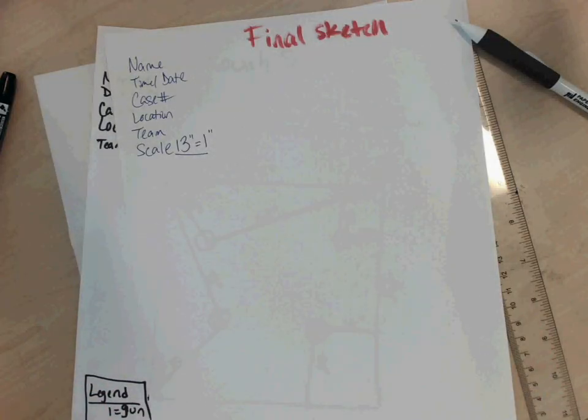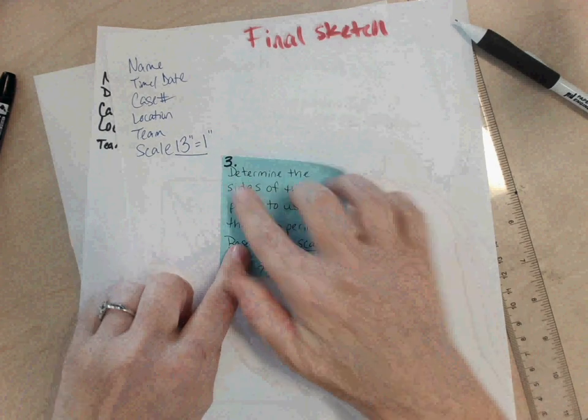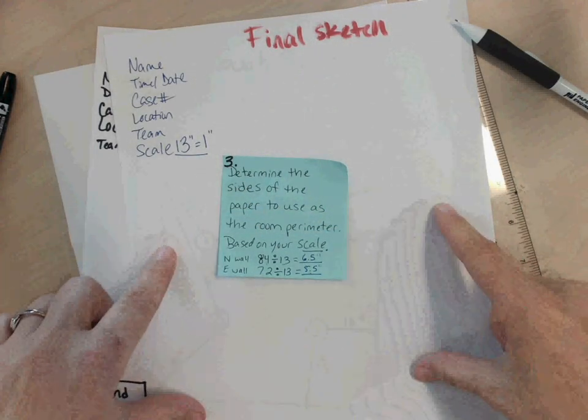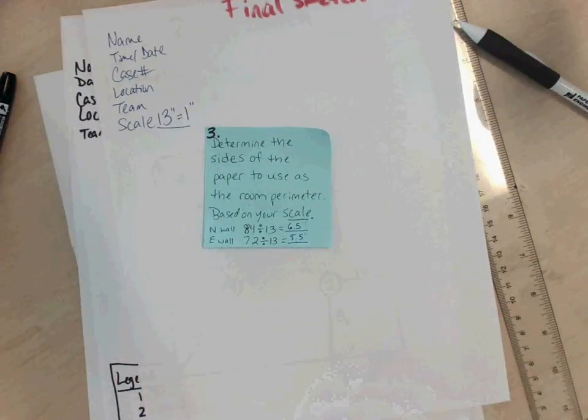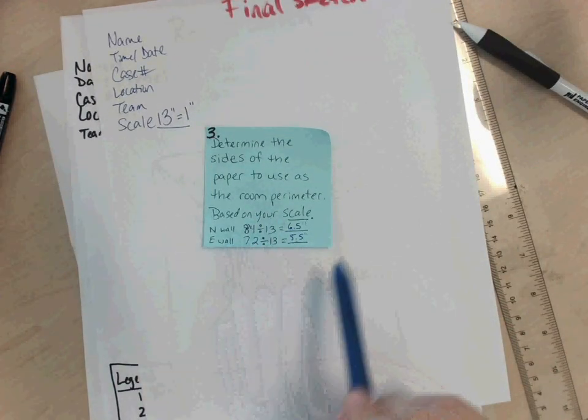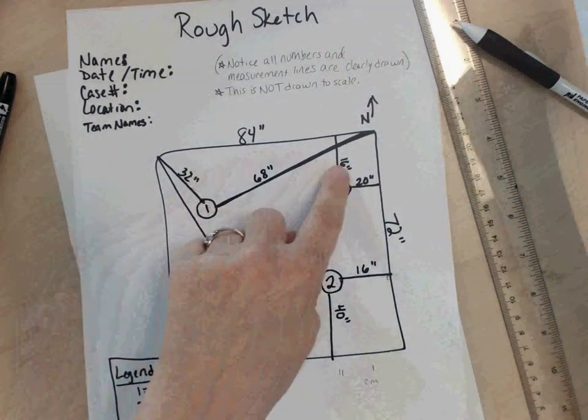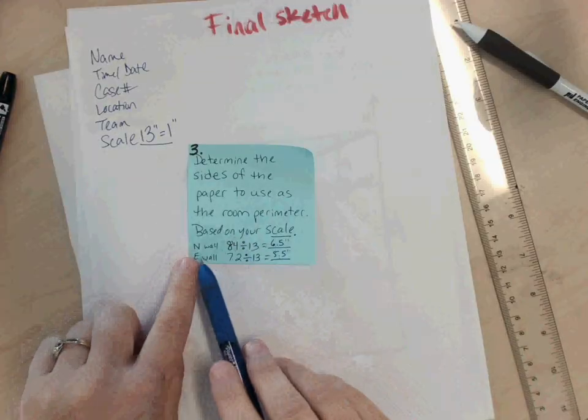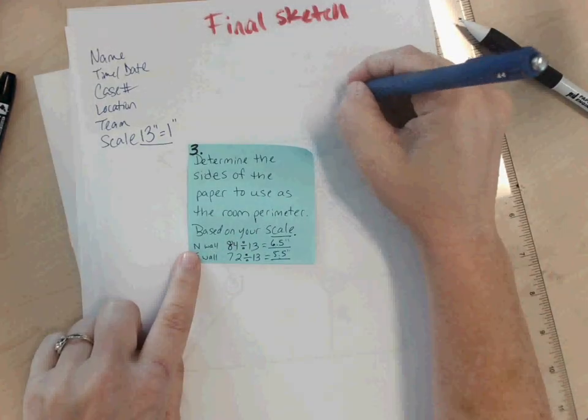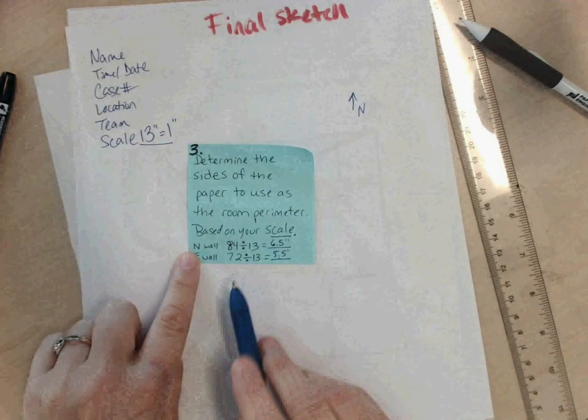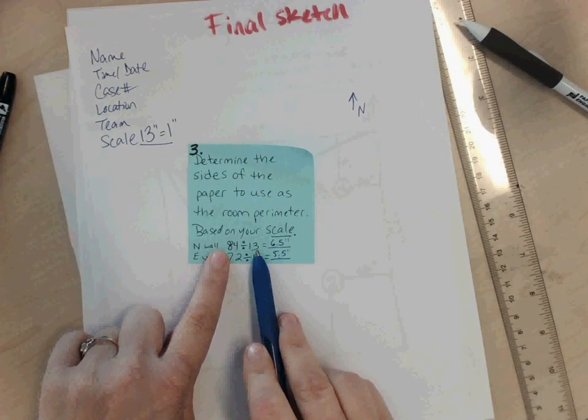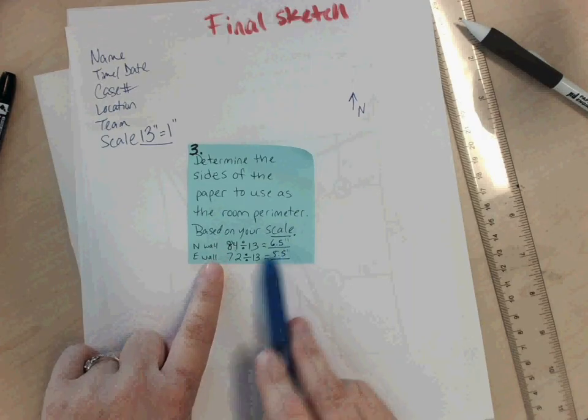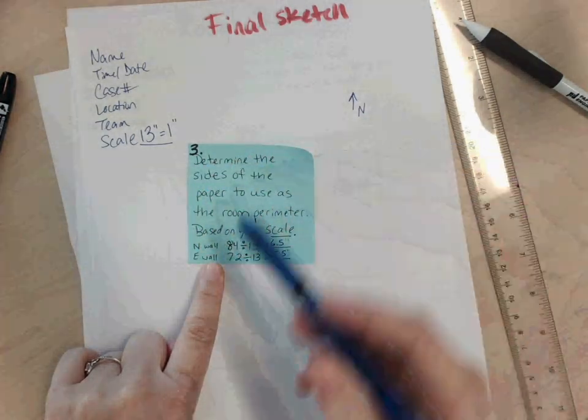Now that I have figured out that, I need to determine the size of the paper to use as my perimeter. I need to draw my room on here, but I need to make sure it's drawn to scale. So since 13 is my magic number, every single measurement that I took in this sketch is going to get divided by 13, including my walls. So my north side wall, I'm going to include north, my north side wall was 84, divided by my magic number 13, that's my scaled number, I get 6.5. So my north wall is going to be 6.5 inches long.